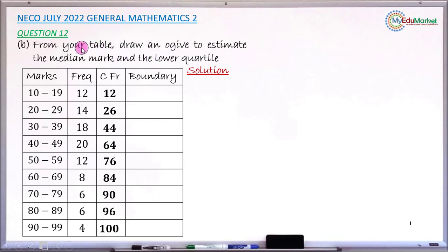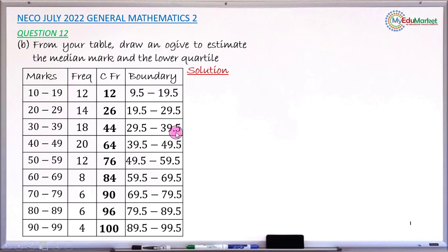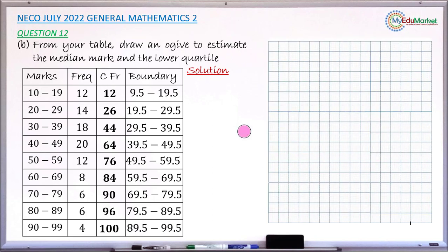For question (b), we draw the cumulative frequency curve (ogive). To do this, we need the class boundaries: adjust the lower limit backward by 0.5 and the upper limit forward by 0.5. So 10 becomes 9.5, and 19 becomes 19.5. Similarly 20 becomes 19.5 and 29 becomes 29.5, continuing up to 89.5 to 99.5.